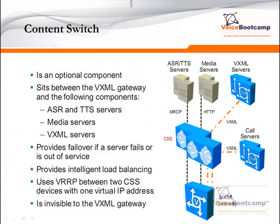The content switch, which is optional, can be placed between the VoiceXML gateway and various servers such as VXML, media server, ASR, and TTS server. It provides failover if one server in the farm fails, and offers intelligent load balancing. Use VRRP — which is very similar to HSRP — between two CSS devices with one virtual address, so that when one device goes down, the second continues to function. The virtual address is where traffic is pointed to, and it is invisible from the VXML gateway. The VXML gateway only knows the virtual IP address, which actually belongs to the CSS, which then distributes traffic across the multiple VXML servers.